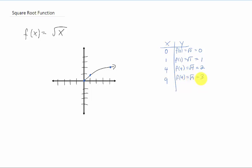And we could continue with other perfect squares. If we plug in x equals 9, we get the square root of 9, which is 3. So we also have the point (9, 3) on this graph somewhere over here.